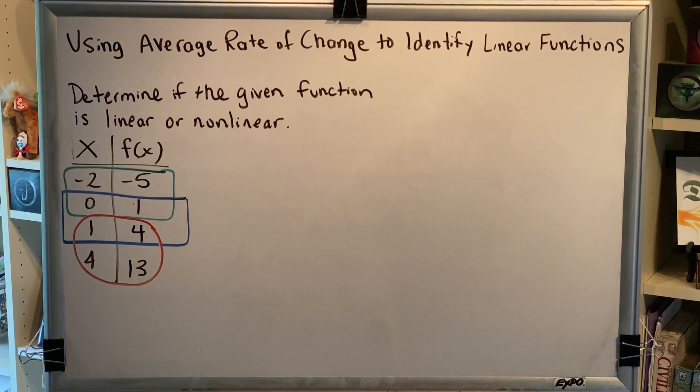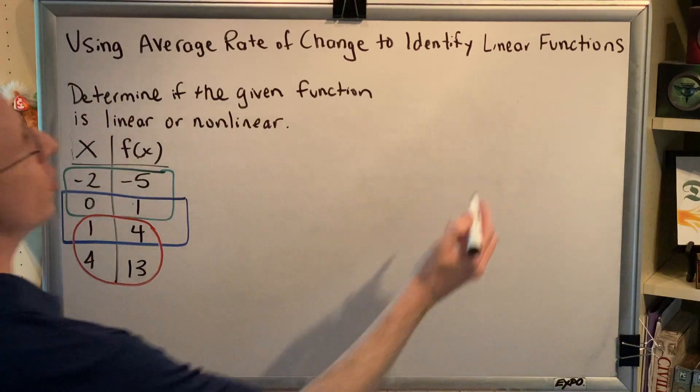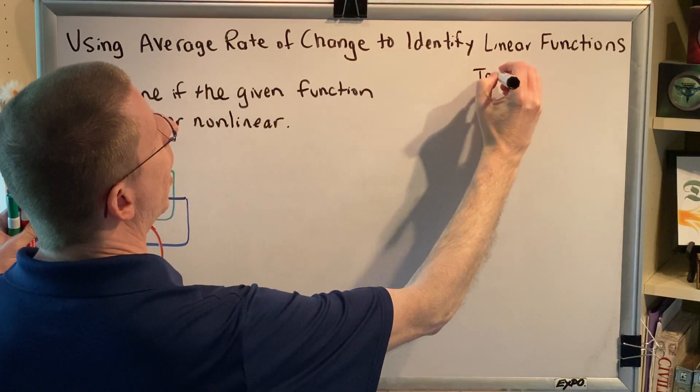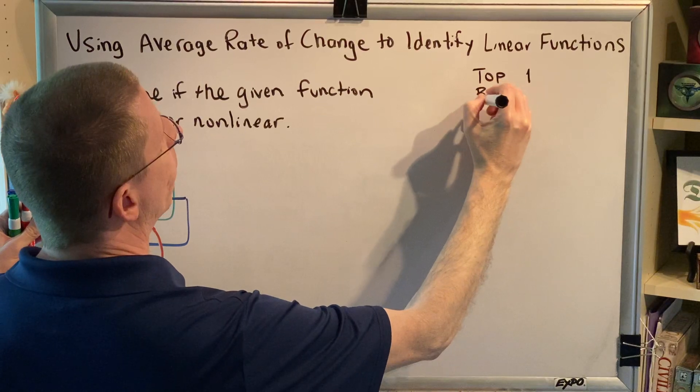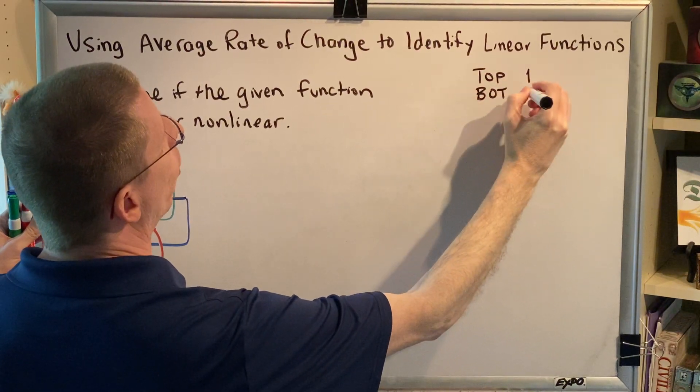Now, one of the things that you have to understand when you're dealing with the slope formula is you need to identify which point is going to be point one and which point is going to be point two, and that can create confusion when you're using the same point more than once. So let's just agree on the following convention. We're going to say that the top point will always be point one and the bottom point will always be point two.